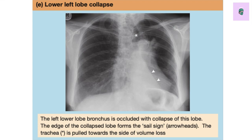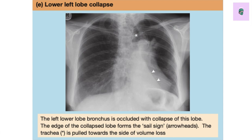Next is lower left lobe collapse. The lower left bronchus is occluded, causing collapse of that lobe. The edge of the collapsed lobe forms the sail sign — it looks like a boat sail, like from Pirates of the Caribbean. Please revise these images again and again because they have a high frequency of appearing in exams. As our teacher used to say, you cannot see what your brain does not know — you have to recognize it in order to identify it, otherwise it will be right in front of you and you won't see it.